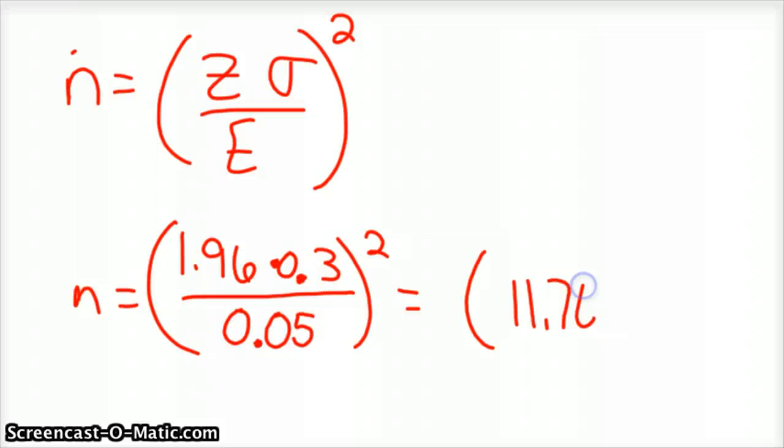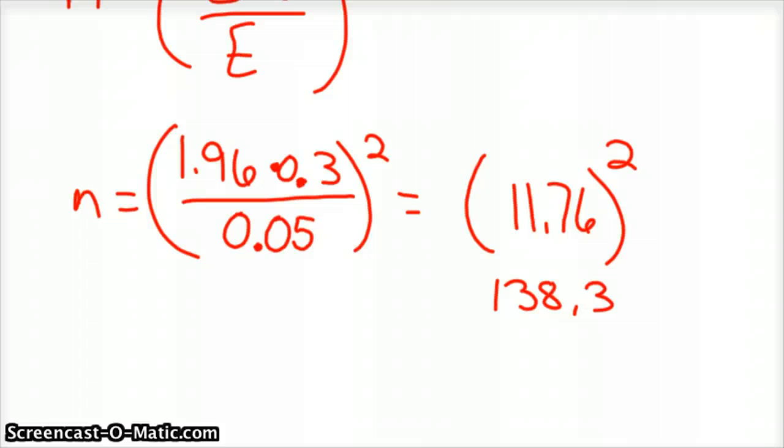And so you square that, and you get 138.3. So we need to take a sample of 140 ball bearings, or 139 ball bearings, to be precise, to the nearest ball bearing.